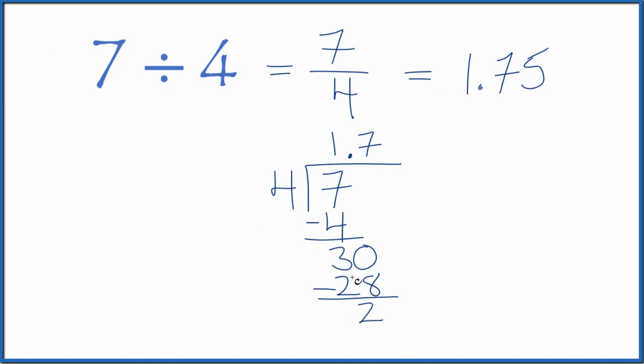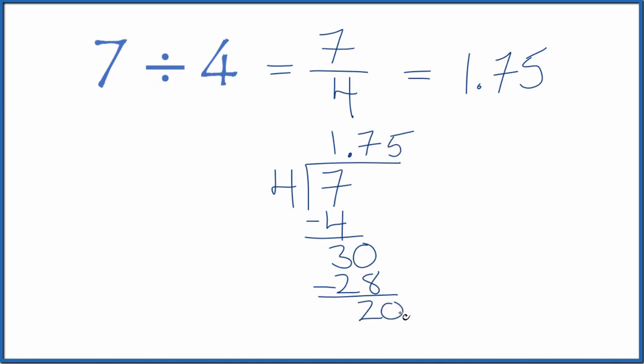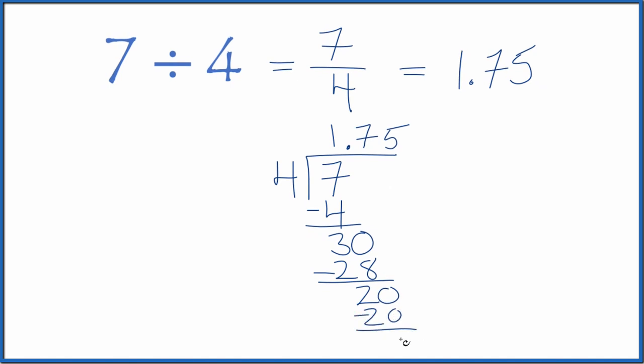Subtract, that gives us 2, and call it 20. Move over 1. 5 times 4, that's 20. Subtract, no remainder. So 7 divided by 4 is 1.75. That's what we found before.